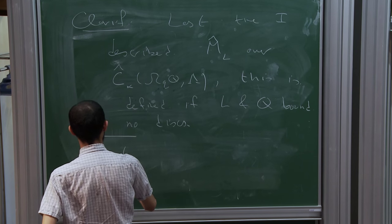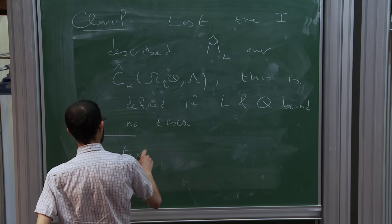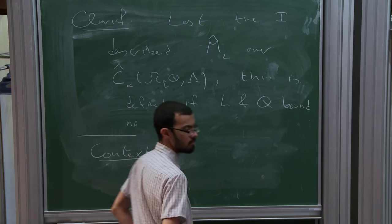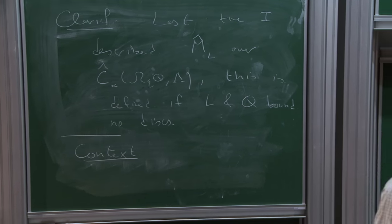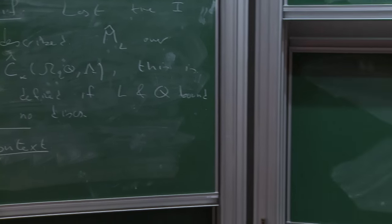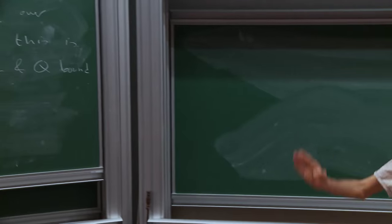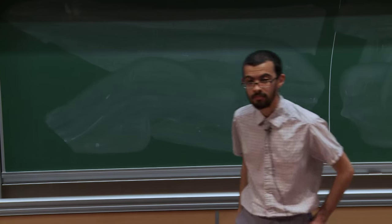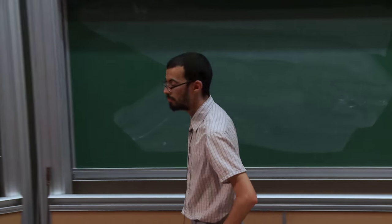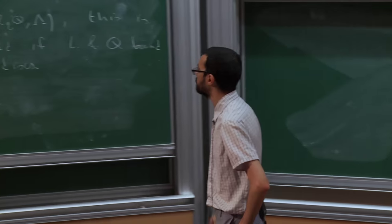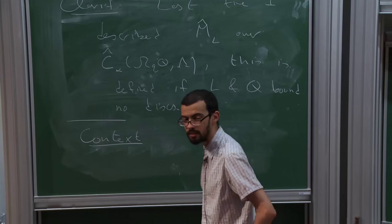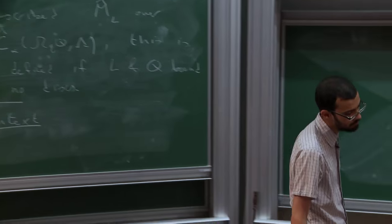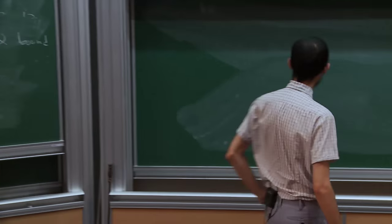Did you say anything about bounding disks — no disks — last time? It was going back and forth. At some point I said it, but I didn't say it at the point where I introduced this. Does that mean L and Q each of them doesn't bound disks, or together they don't bound disks? Let me give the context and we'll come back to this.